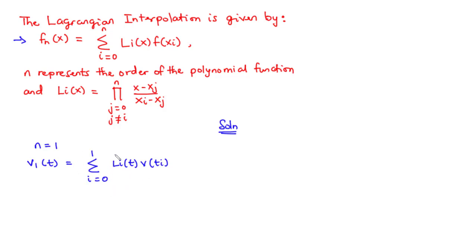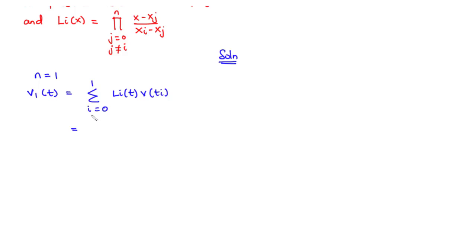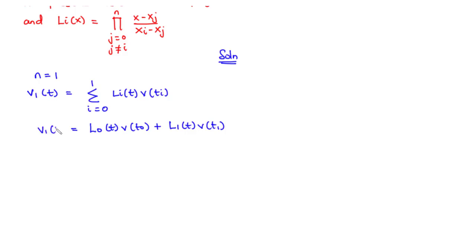Because we have a summation, we can expand this from i=0 to i=1. So we get L0(t) times v(t0) plus L1(t) times v(t1). This gives us four components, which will help us develop an expression for v1(t). Then we can find v1(16), that is when t equals 16.